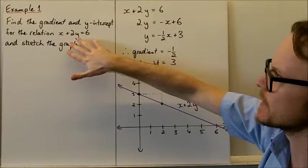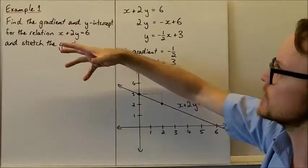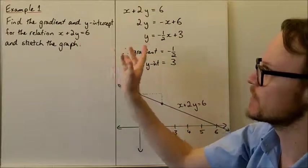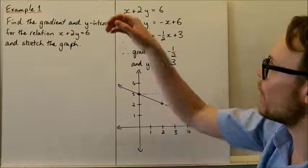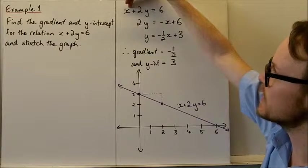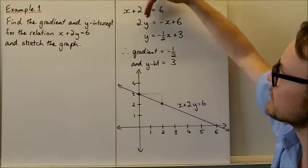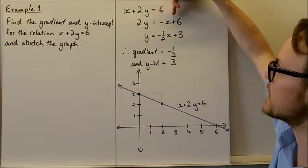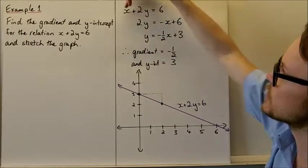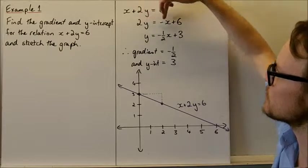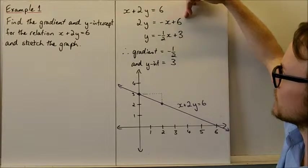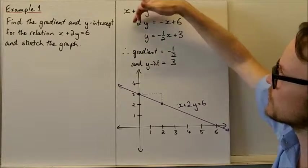We're essentially trying to get y by itself, isolate y by removing everything from the y. We've got x plus 2y. Subtract x from both sides, so 2y equals negative x plus 6. Now it's starting to look more like y equals mx plus c,